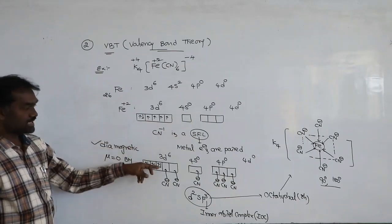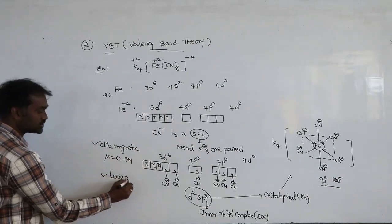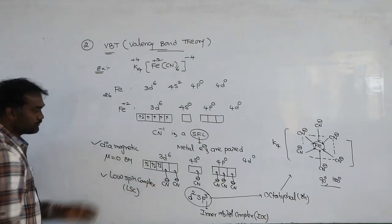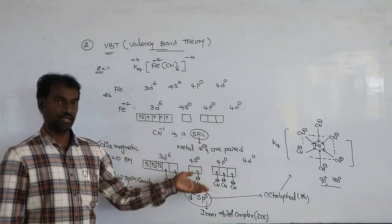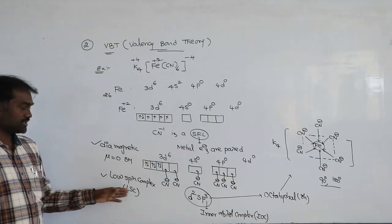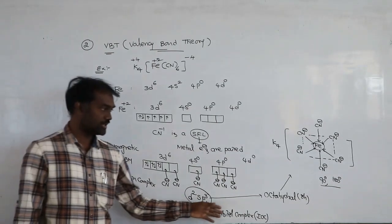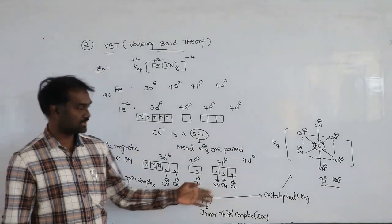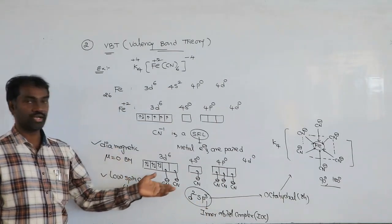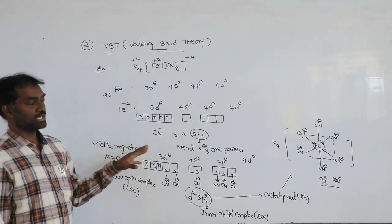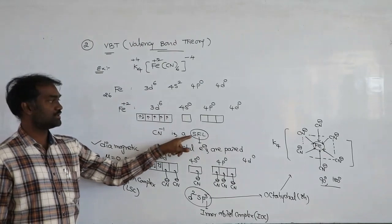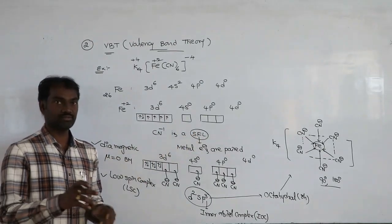Since spin decreases after the ligand comes in, this is called a low spin complex. Write each point one by one — that is your theory answer. For entrance: is it paramagnetic or diamagnetic, mu value, low spin or high spin, inner or outer orbital, hybridization, structure, bond angles. Now, instead of cyanide, if we put chlorine — that is a weak field ligand — what happens? We will discuss that now.